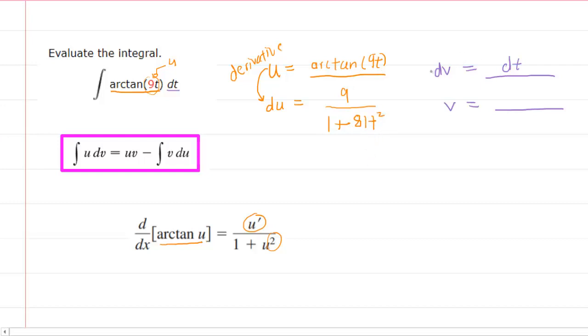And then we go over to the other side. To go from dv to v requires us to integrate. Really, the only thing we're integrating is 1 with respect to t. And the integral of 1 with respect to t is just t.